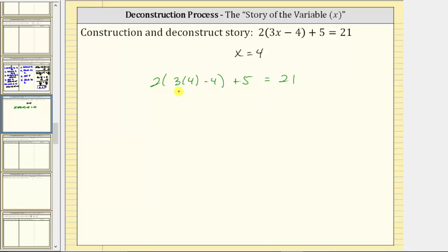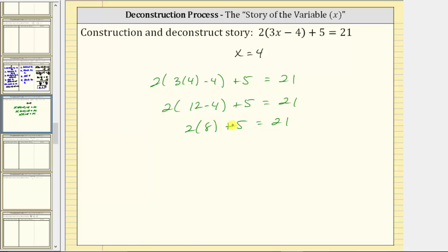Simplifying the left side using the order of operations, we simplify inside the parentheses first — we multiply before subtracting. The left side simplifies to two times the quantity twelve minus four, plus five equals twenty-one. Inside the parentheses, twelve minus four equals eight, so we have two times eight plus five equals twenty-one. Two times eight is sixteen, and sixteen plus five equals twenty-one. Twenty-one equals twenty-one is true, which verifies our solution is correct. I hope you found this helpful.